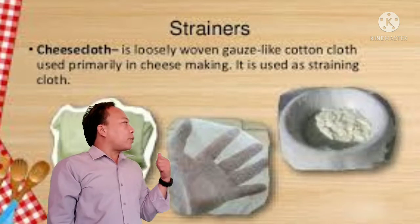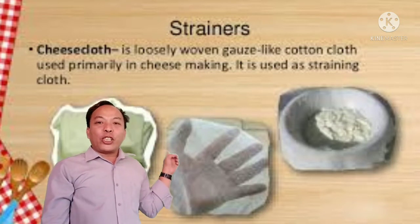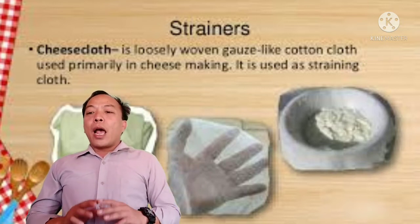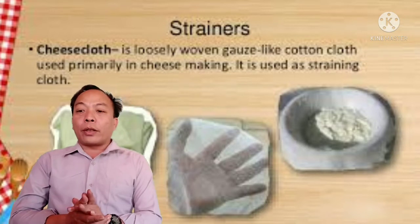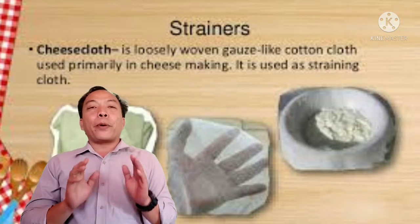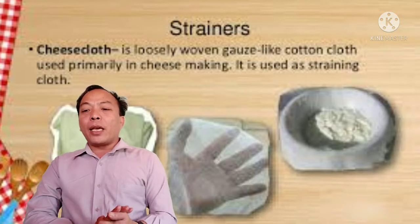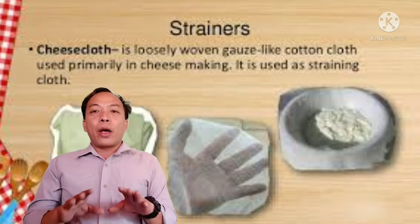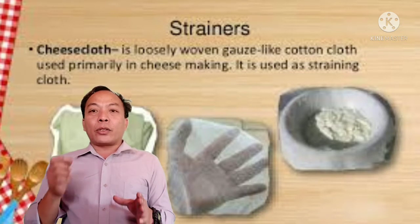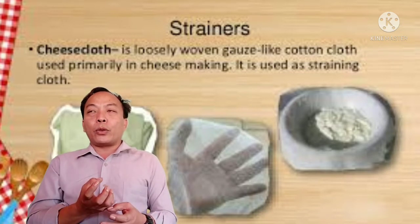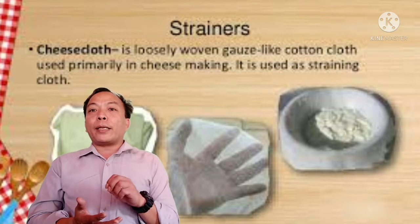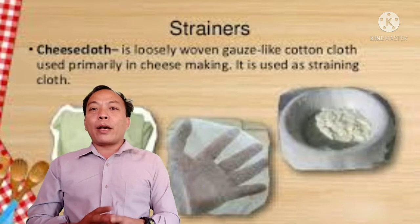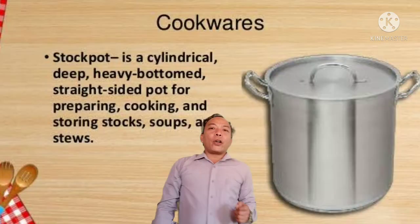Another example of a strainer is the cheesecloth. Cheesecloth is loosely woven gauze, usually a cotton cloth type, used primarily in cheese making. It is also used for straining liquid — for example, when pouring soup you can strain out different debris, and the liquid will pass through the cheesecloth mesh for a clean, clear output.